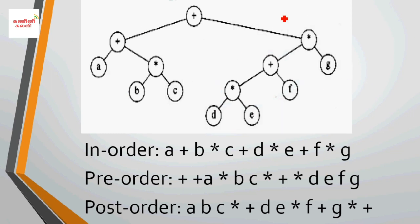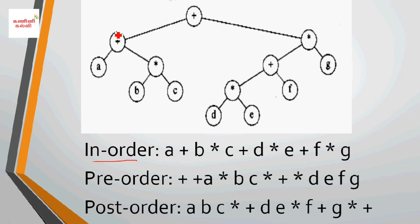Now we will apply traversals to an expression tree. For in-order traversal, we process left, root, right. Starting from the full tree, we go left first. The leftmost subtree has 5 nodes. We go left to that subtree's left child, then process the root, then right.